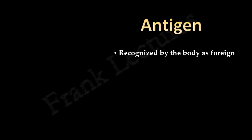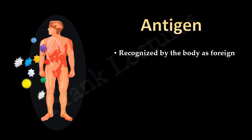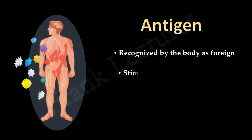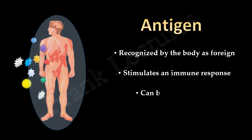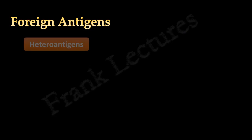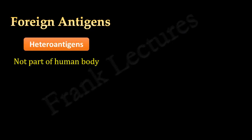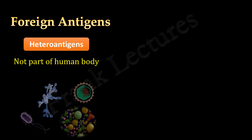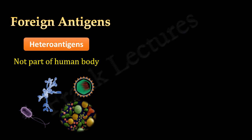Recall that an antigen is a substance that is recognized by our immune system as foreign, and as a result, an immune response is stimulated against it. We also know that antigens can be foreign or self. Foreign antigens or heteroantigens are not part of our body — for example, bacteria, viruses, pollen, parasites, etc.